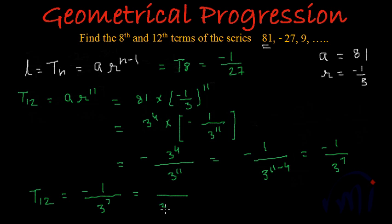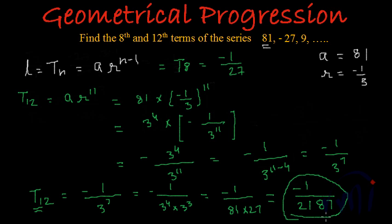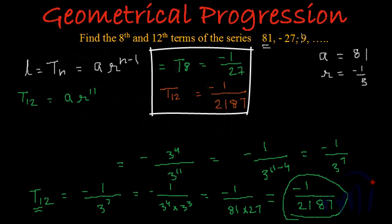3 to the power 7 is 3 to the power 4 multiplied by 3 to the power 3. And 3 to the power 4 is 81, and 3 to the power 3 is 27. So T12 equals minus 1 by 81 multiplied by 27, which is minus 1 by 2187. So we have got our twelfth term as minus 1 by 2187. These were the two terms we were supposed to find. After this, we are going to learn about geometrical means and how to insert geometrical means between any two given numbers. Bye-bye till then.